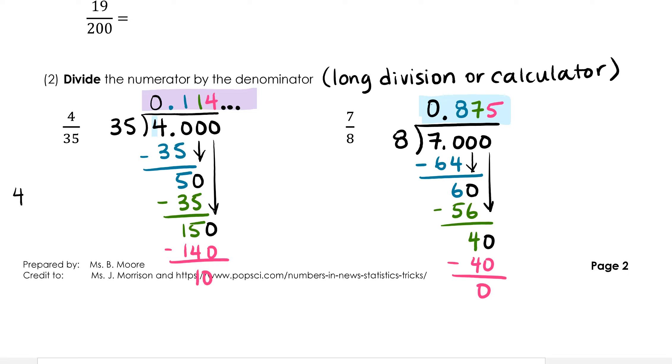Simply type 4 divided by 35, and you will get 0.114, etc. Likewise, 7 divided by 8 will give you 0.875. Please don't forget that long division is a really useful skill to know. For example, when I was in first year university studying engineering and taking calculus, we were not allowed to have calculators on our final exams. The whole margin of my exam got filled up with long division as I was simplifying complex answers.